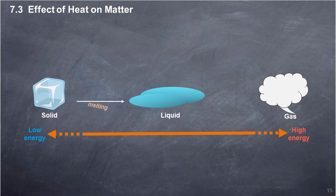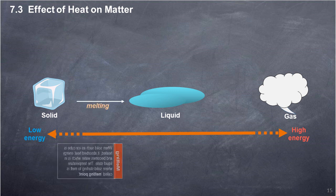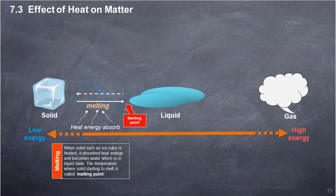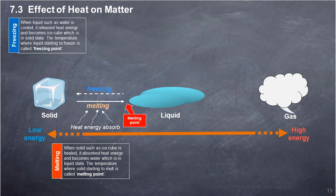Melting: when a solid such as an ice cube is heated, it absorbs heat energy and becomes water, which is in liquid state. The temperature where a solid starts to melt is called the melting point. When liquid such as water is cooled, it releases heat energy and becomes ice, which is in solid state. The temperature where a liquid starts to freeze is called the freezing point.